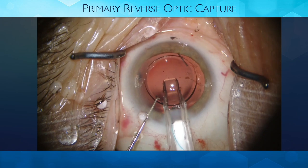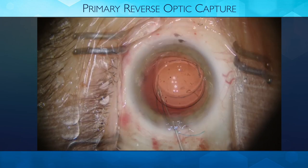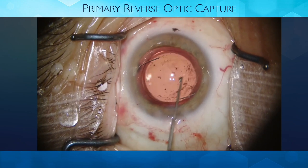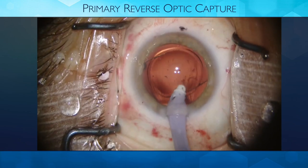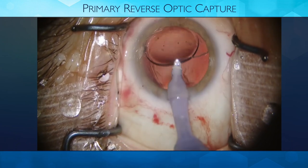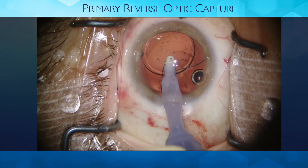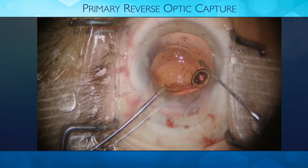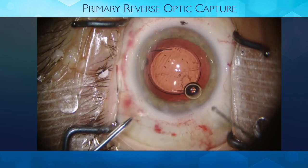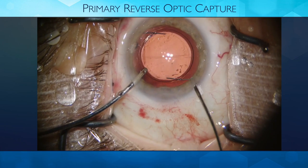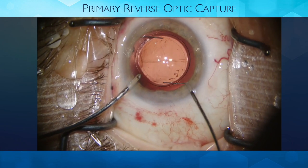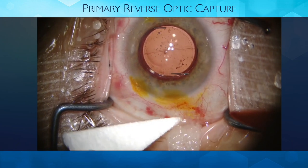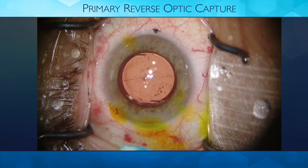The last case is primary reverse optic capture. This patient had negative dysphotopsia in the first eye and didn't want that eye touched, so we needed to address severe anisometropia in the second eye. Do we risk negative dysphotopsia again — anecdotally about a 50% chance in the fellow eye — or do something different? When we do primary reverse optic capture in the second eye — placing the IOL with haptics in the bag and popping the optic on top of the capsule — we have a 100% success rate for no negative dysphotopsia. For secondary reverse optic capture, it's approximately a 96% success rate. The optic sits anterior to the anterior capsule with the haptics in the bag.